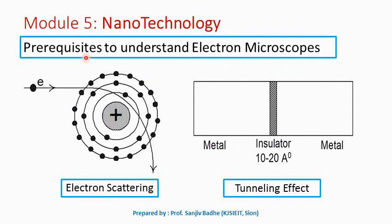Let us discuss some of the prerequisites required to understand electron microscopes. We will be discussing phenomena like electron scattering, tunneling effect, electrostatic focusing and magnetostatic focusing. These phenomena will be used in different types of electron microscopes.